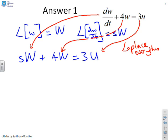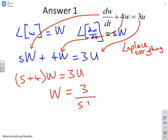Nothing else, simply taking Laplace of everything in the equation. Now what I can do is I can group common terms together. So I get (s+4) into capital W equals 3U. Or if I rearrange this, W = 3/(s+4) into U.